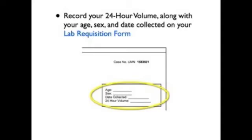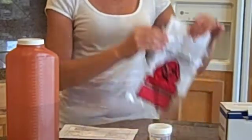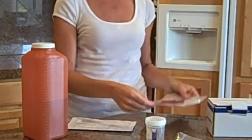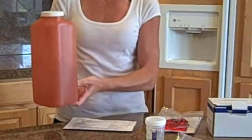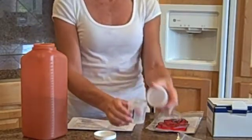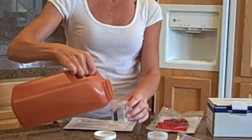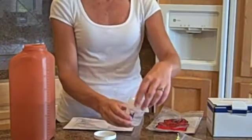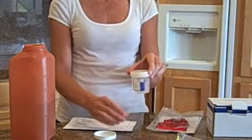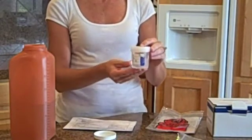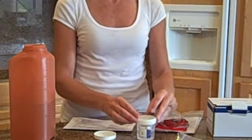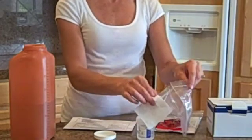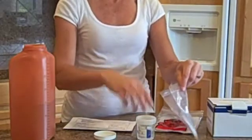Now you are ready to submit your sample. Fold your completed lab requisition form in half with the top of the page facing outward, then slide it into the sleeve onto the plastic biohazard bag provided. Second, take your 24-hour collection container, shake for five seconds, and then pour off your sample into the plastic specimen container provided. Fill the specimen container two-thirds full and then tighten the lid on the sample. Write your name and the date you tested on the label.